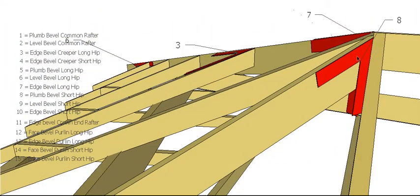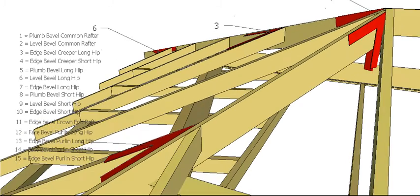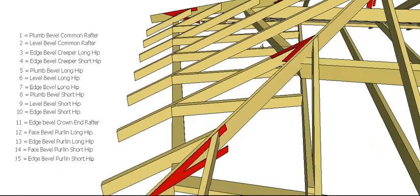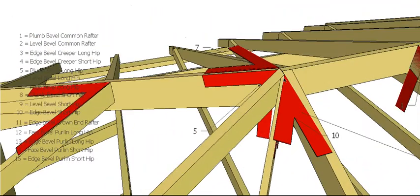We also need our plumb bevel for our short hip and level bevel for our short hip. And again, another edge bevel for our short hip, maybe a little bit sharper, a little bit steeper than our long hip one. That's got us to number 10.